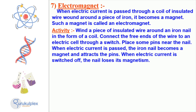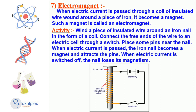Electric current has a significant effect on our daily life, and can be demonstrated in the construction of electromagnets. An electromagnet can be made by winding an insulated wire around an iron core and connecting the wire ends to an electric cell through a switch. When the current runs through the wire, the iron core acquires magnetic properties and attracts pins. However, when the electric current is switched off, the magnetism of the iron core dissipates.